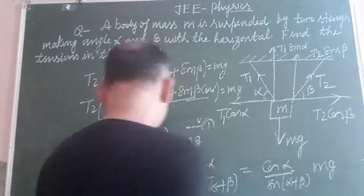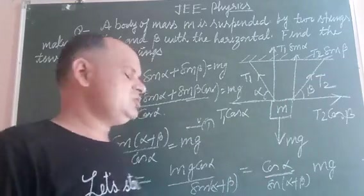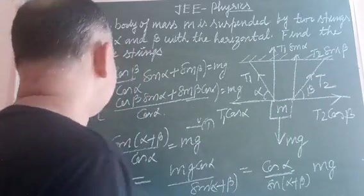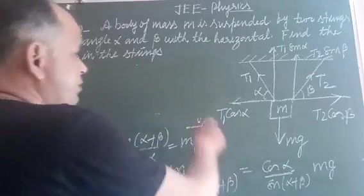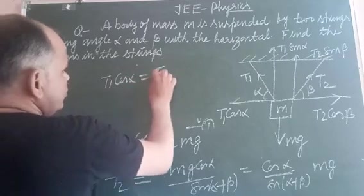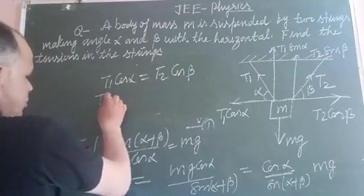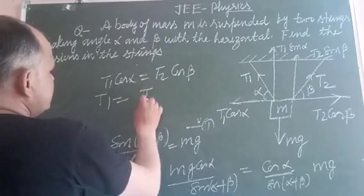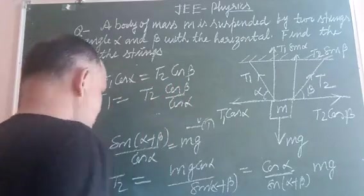So this is the tension T2 in the second string. Now we find T1. From equation, T1 cos alpha equal to T2 cos beta, therefore T1 equal to T2 cos beta over cos alpha.